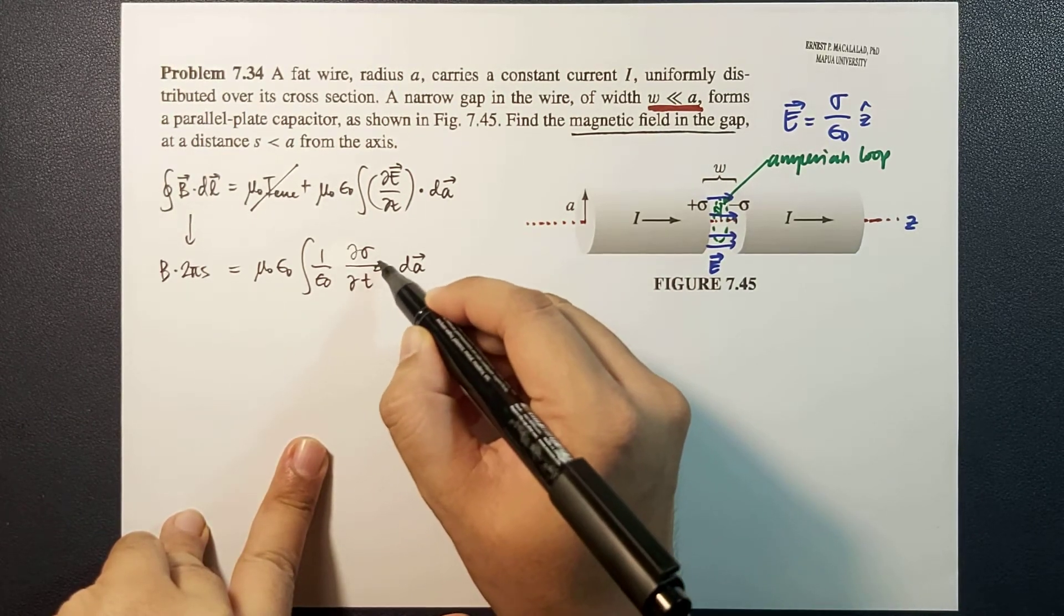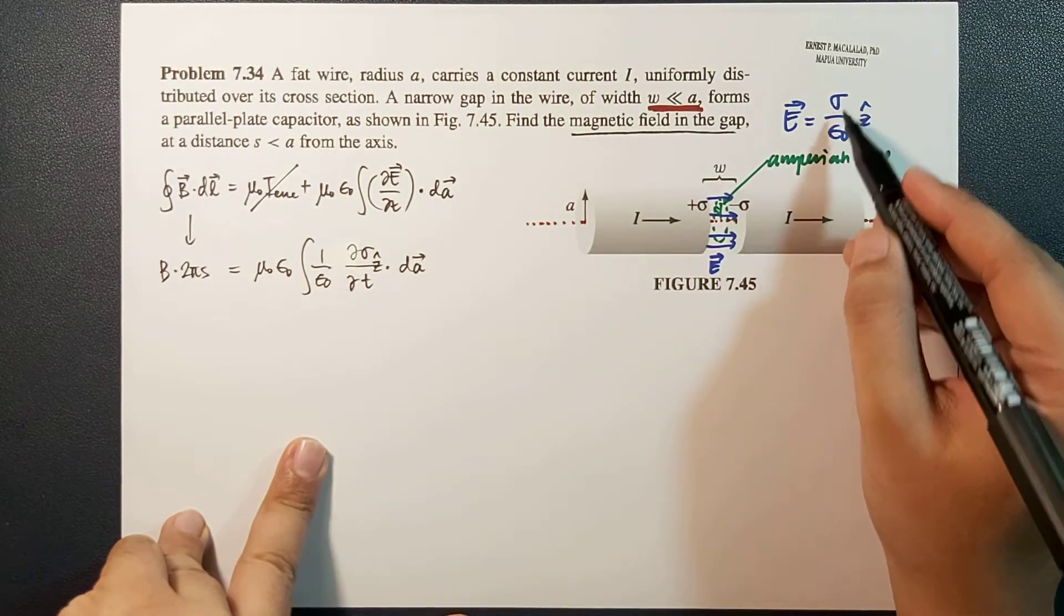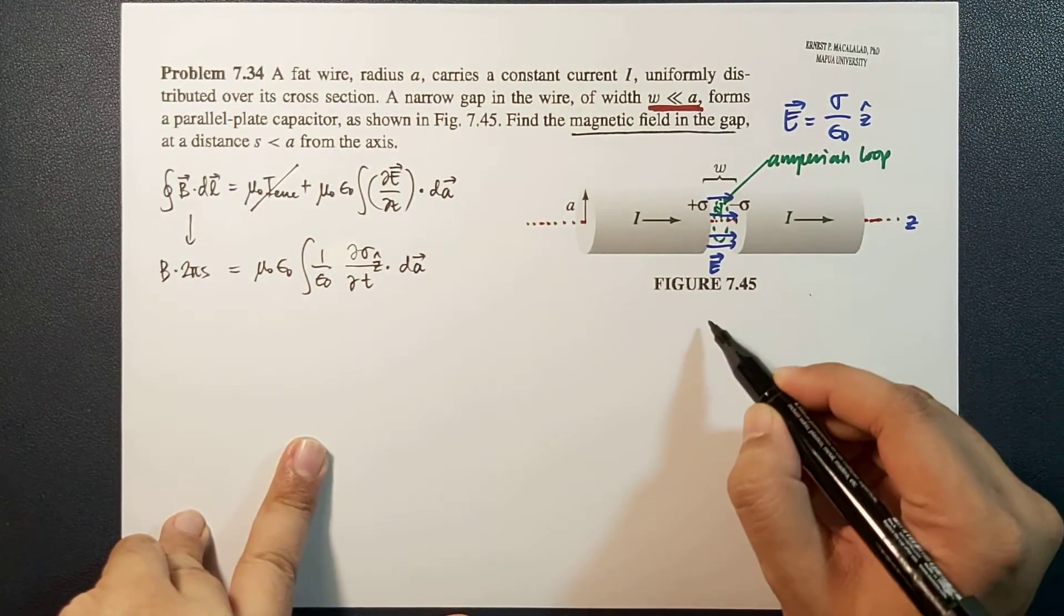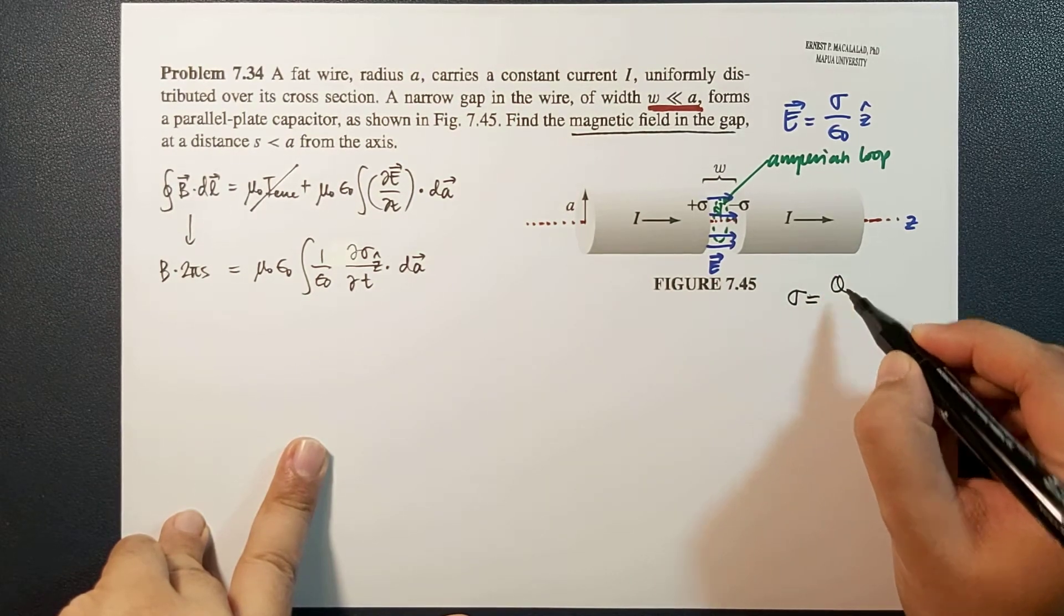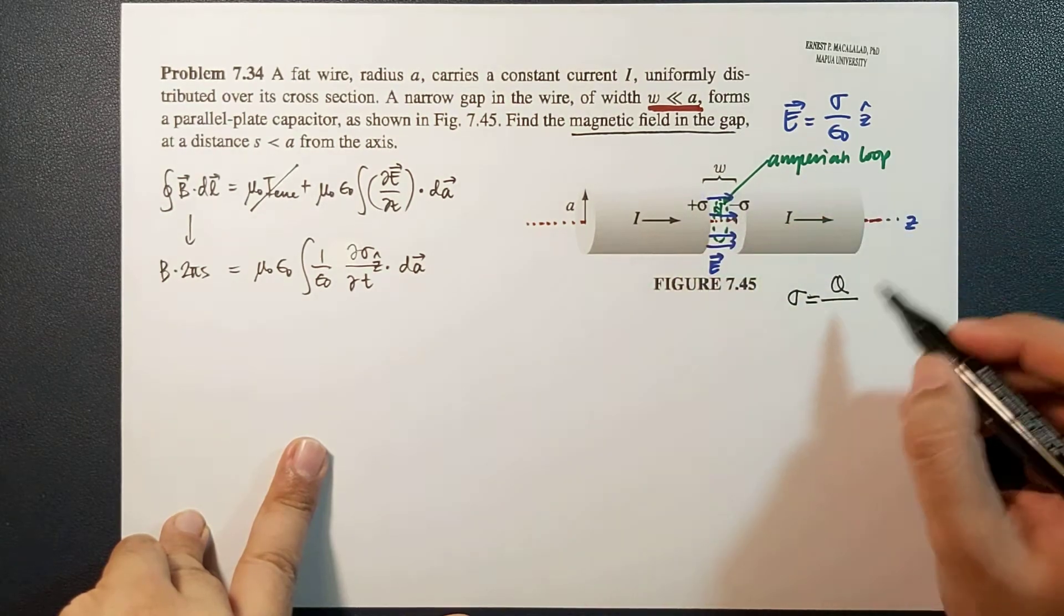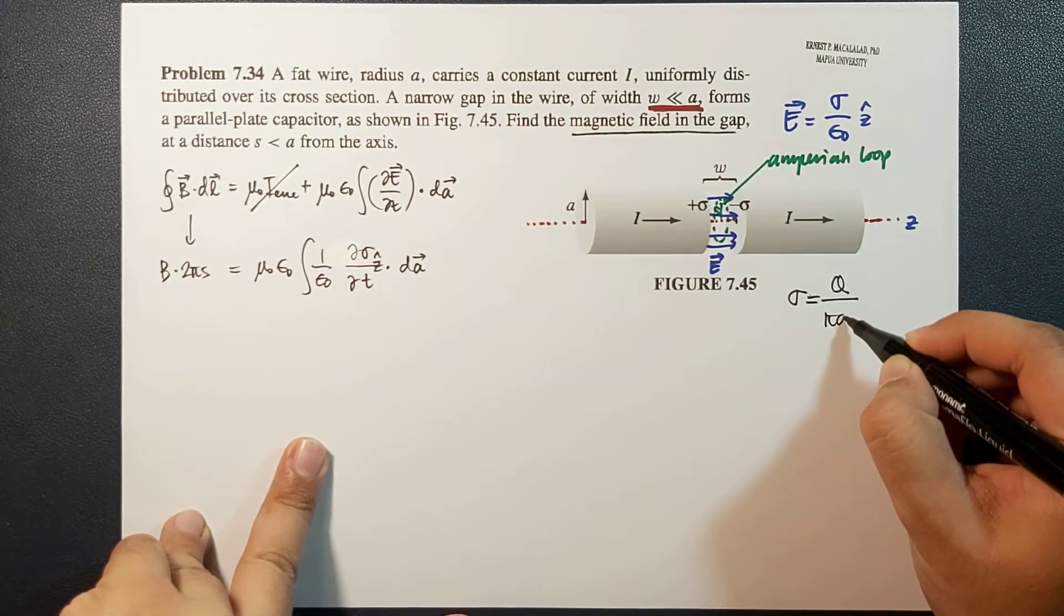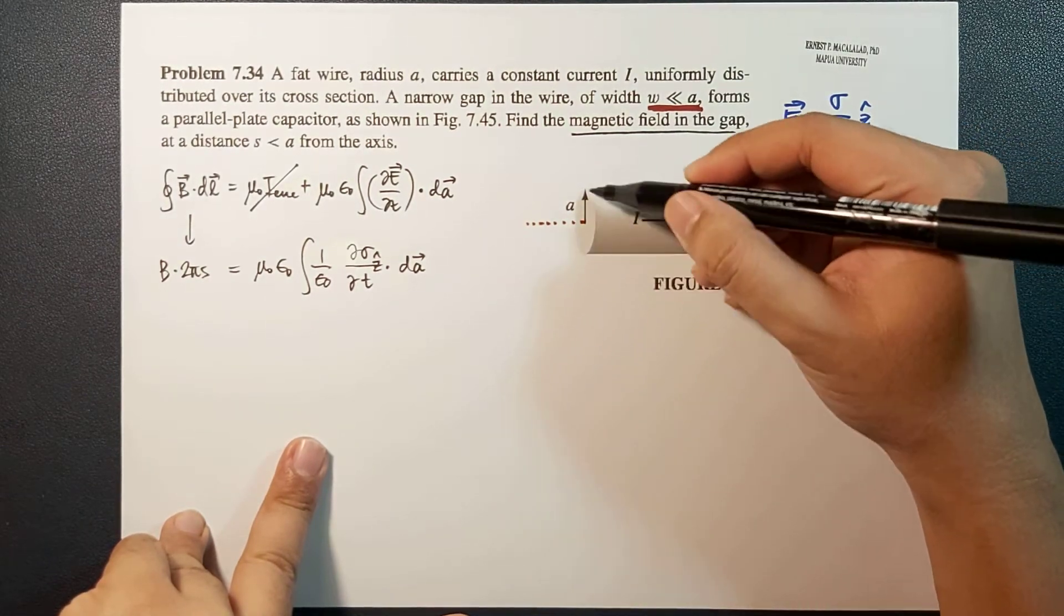Since sigma is uniform, that means your sigma will now be equal to the total charge q divided by the cross-sectional area, which is pi A squared. So that's the cross-sectional area of the circle.